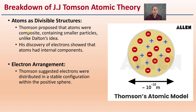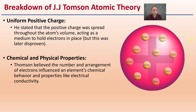Breaking down his atomic theory: atoms are divisible structures. He proposed that atoms are composites containing smaller particles, unlike Dalton's solid idea. He discovered that electrons are internal components of atoms, and their arrangement suggested electrons were distributed in a stable configuration within the positive sphere, as seen in the diagram below. This was later disproven, but it was the next step in the progression of atomic theory. He also thought there was a uniform positive charge spread throughout the atom's volume, acting to hold the electrons together — again, partially disproven, but one step closer to the modern idea.